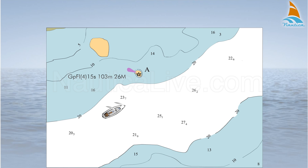After calculating the height of tide at that time, the corrected height of the lighthouse is 105 metres or 345 feet.